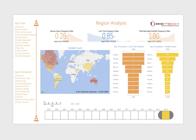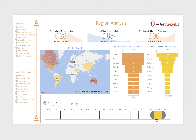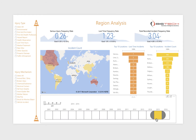Each area within the map can be zoomed into to focus on a country. The timeline down the bottom enables filtering by year to view data changing over time. Funnels on the right hand side highlight those locations with the highest number of lost time and total incident counts.